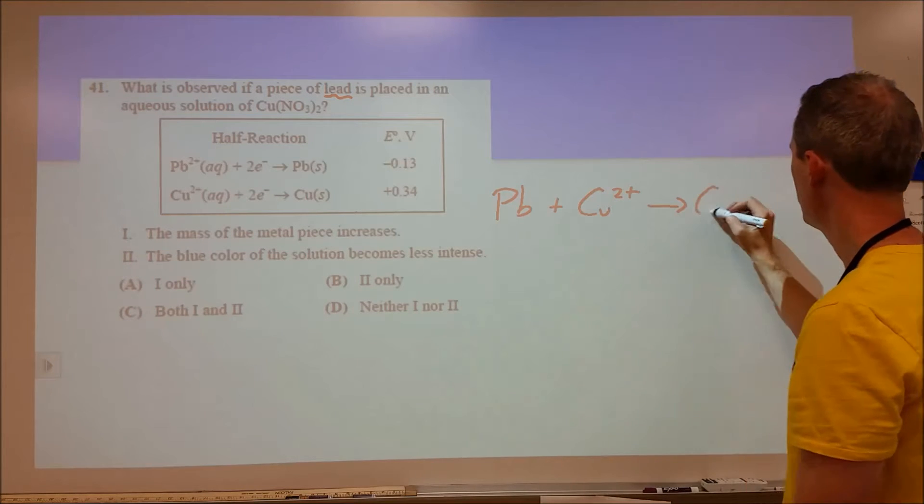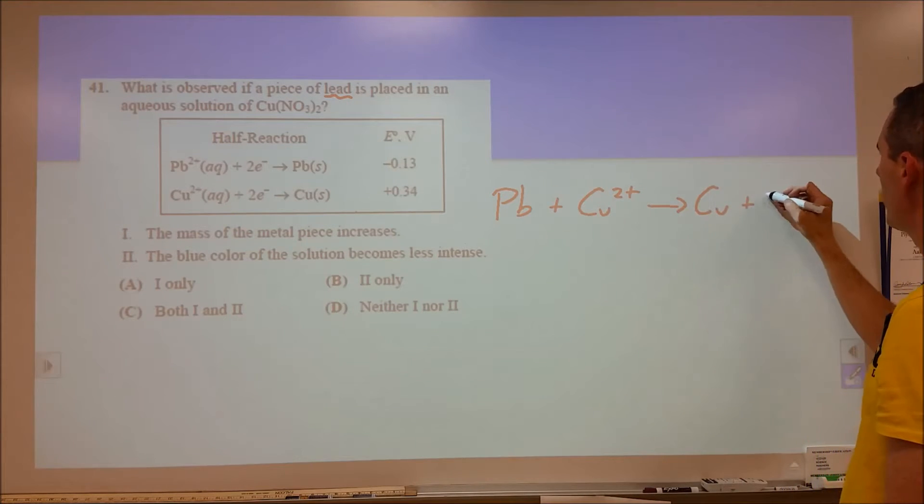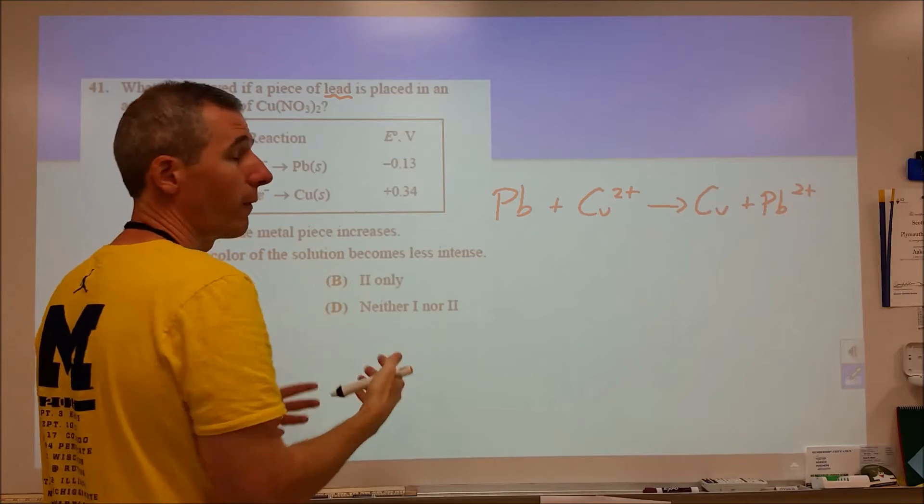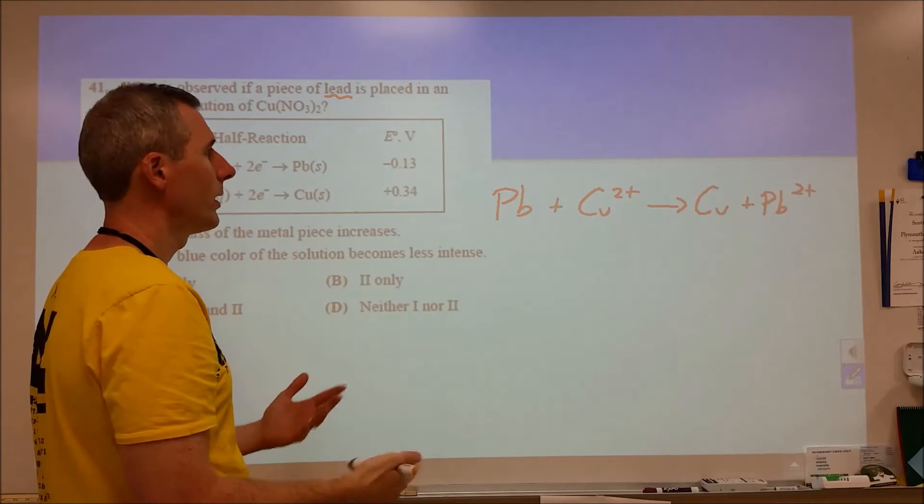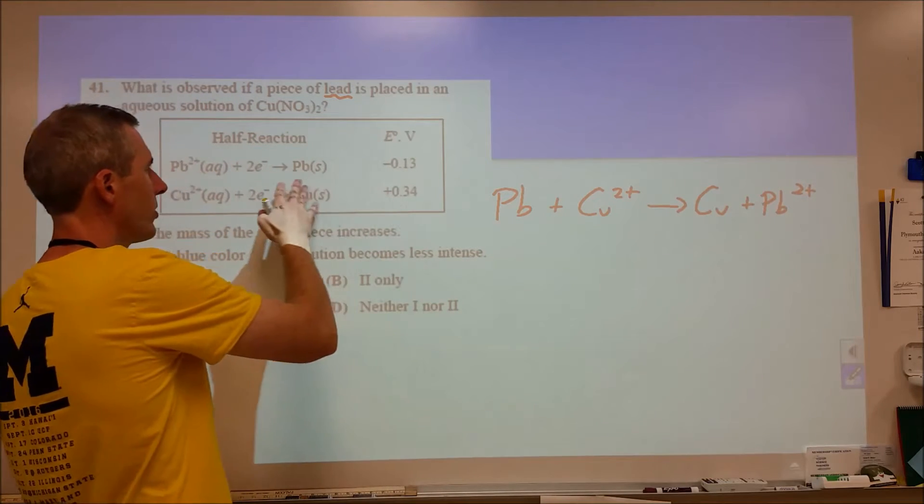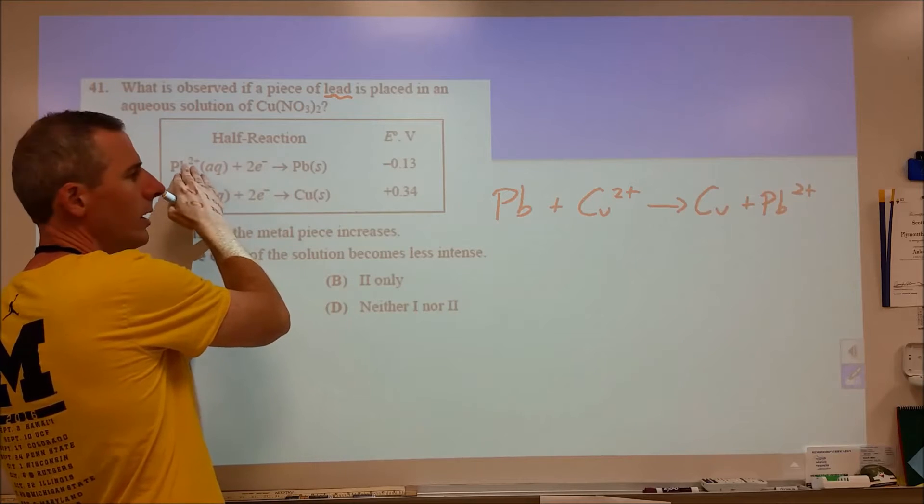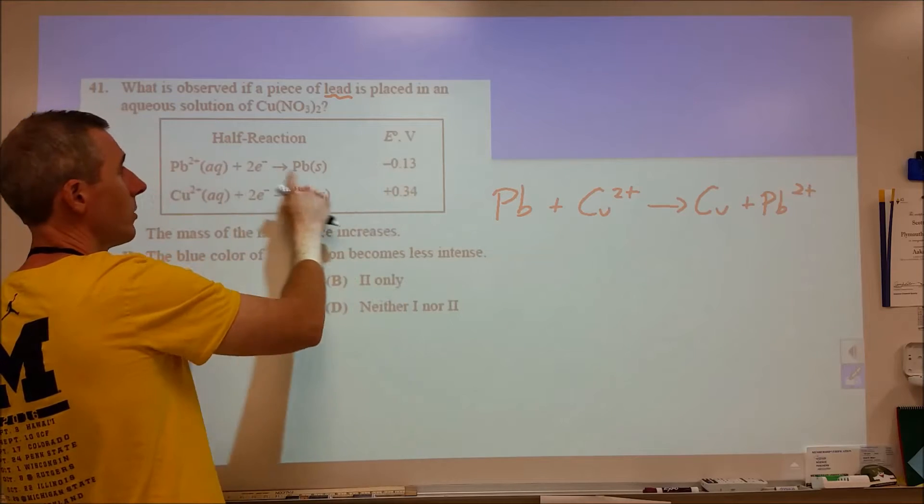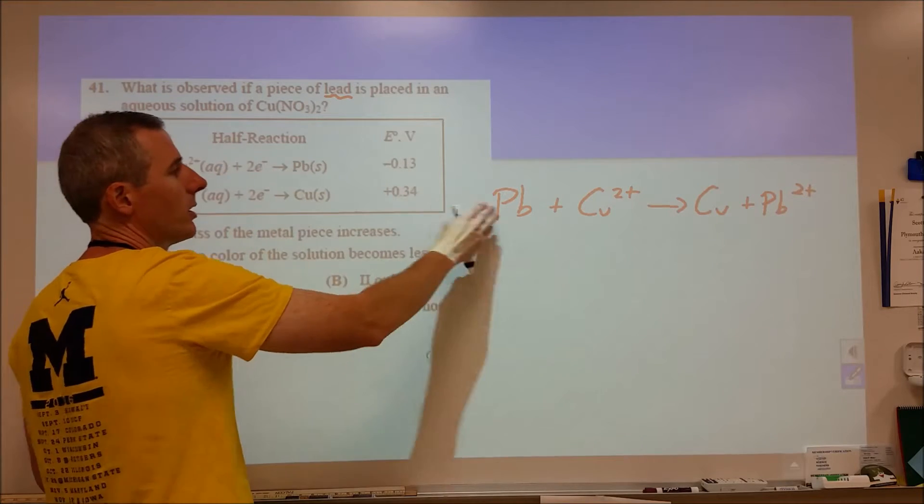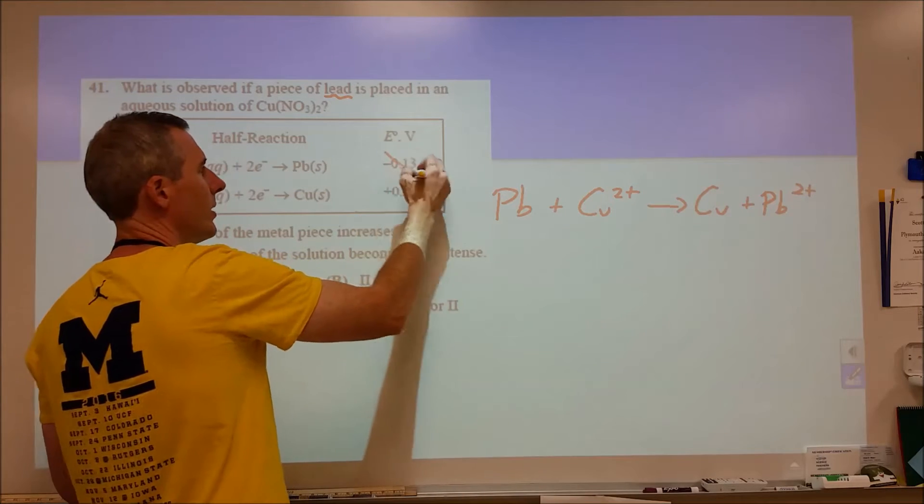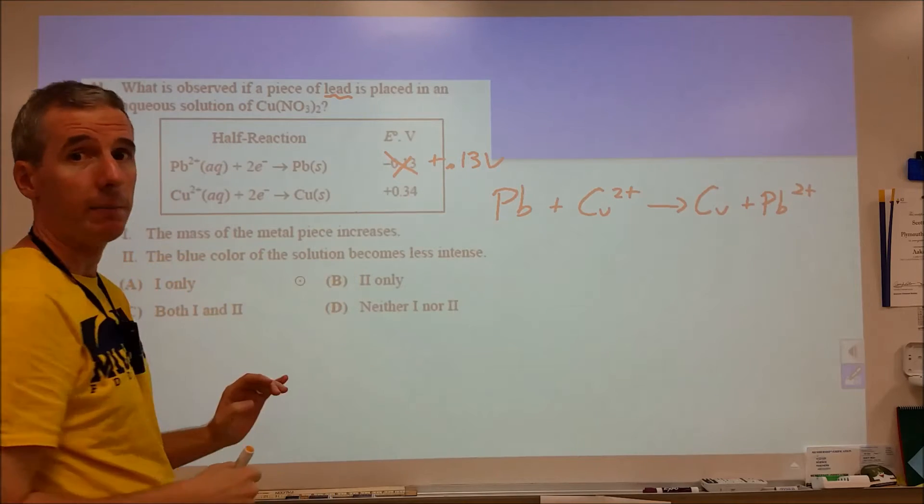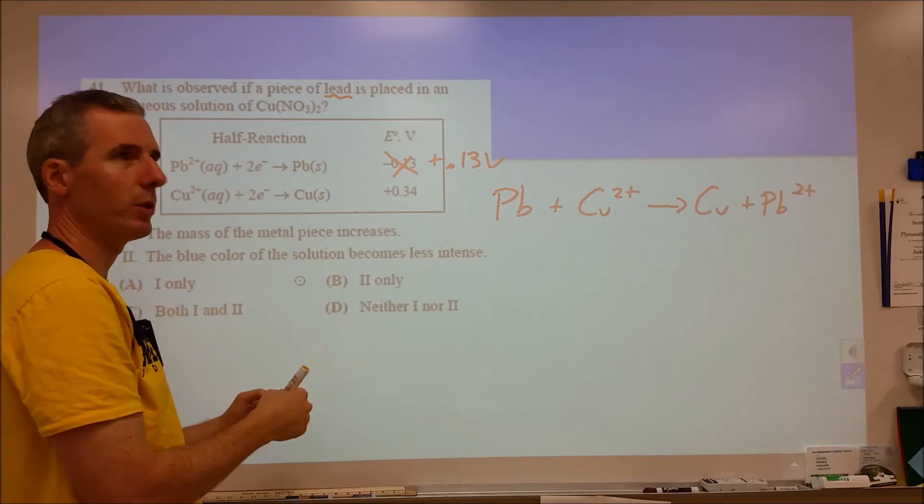The products would turn into copper metal and lead 2 plus. First we want to see will this reaction actually take place. To do that we use these voltages because if our voltage overall is positive, the energy is going to be negative and that reaction is going to proceed spontaneously. The lead we have backwards. We start with lead metal and end with lead 2 plus. That's the reverse of this reduction. Here we're seeing lead being oxidized, so we're going to flip the sign.